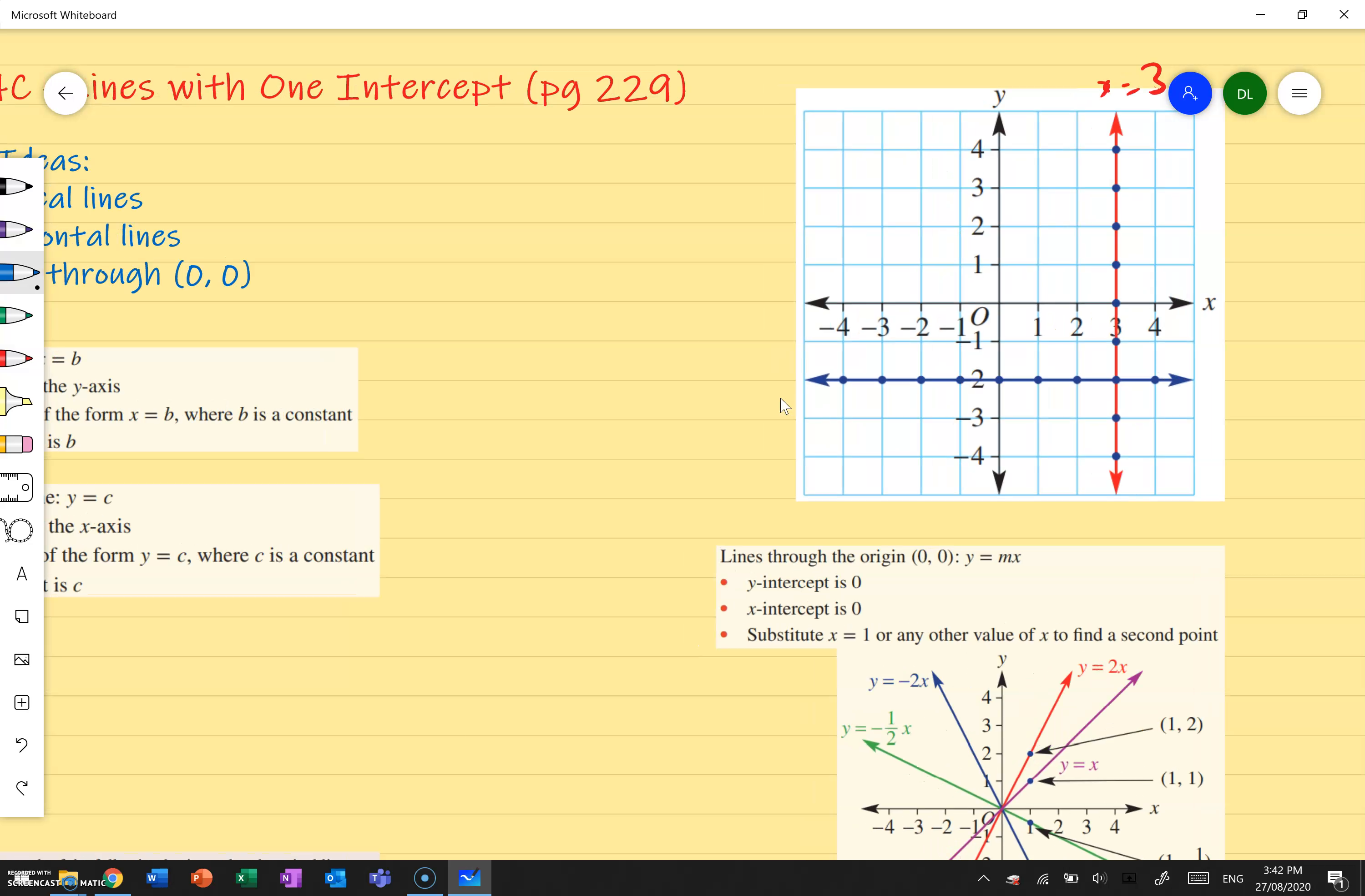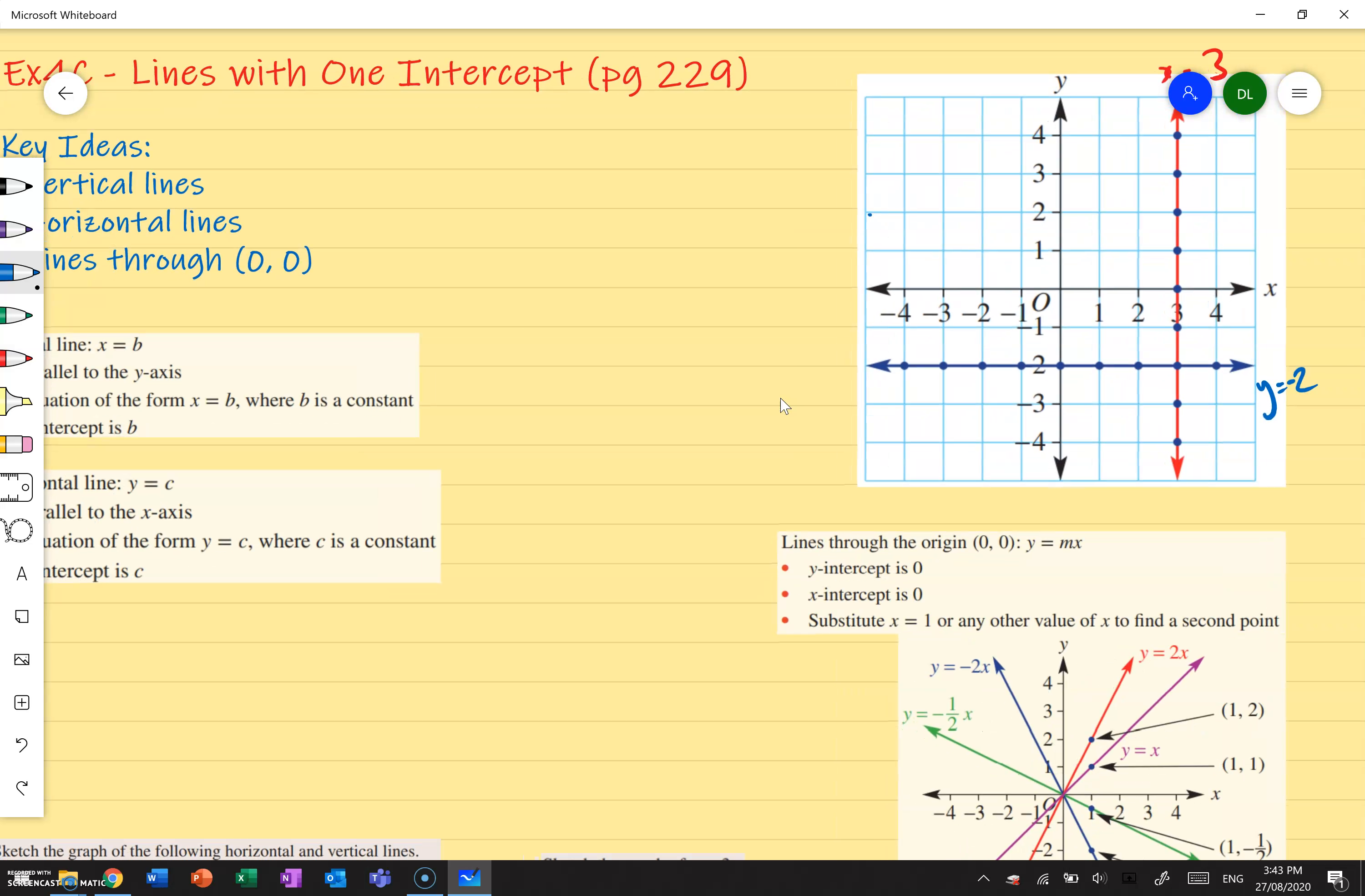Similar idea applies for our blue line which is parallel to our x-axis. It's horizontal and has the equation of y equals c. Once again c is another number, so in this case we know that c is going to be -2 because for whatever value of x, my y value is always going to be negative 2, not positive 2 because if it was positive 2 the line would be up here.